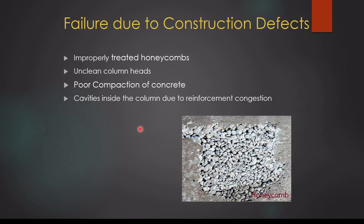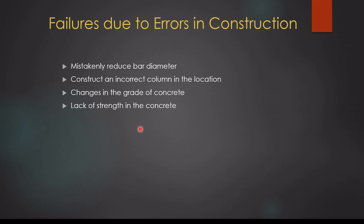Failure due to errors in construction: mistakes such as mistakenly reducing the bar diameter or using incorrect bar diameter can reduce structural capacity. Using incorrect column location is another error — for example, if you have to put four numbers of 20mm bars in a particular column but mistakenly put them in a different location, there will be issues. Changes in concrete grade are also a kind of error — mistakenly using a lower grade concrete in the column leads to lack of strength. Lack of strength in the concrete due to issues in the batching plant, mix design, or mixing process may also lead to reduction in strength, which could cause column failure.